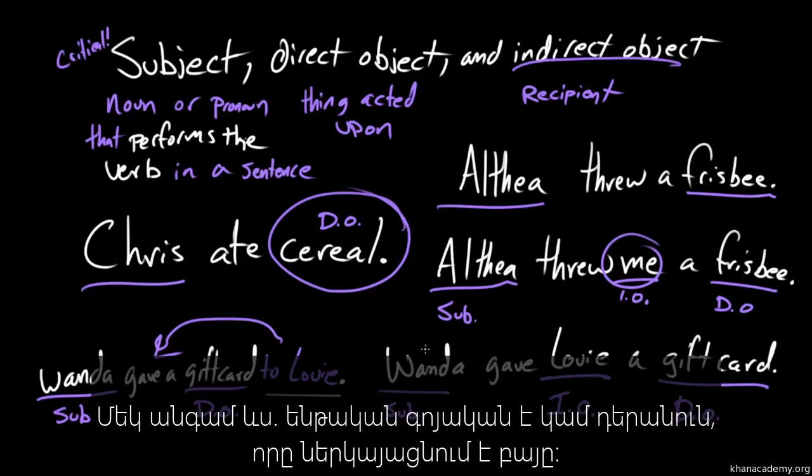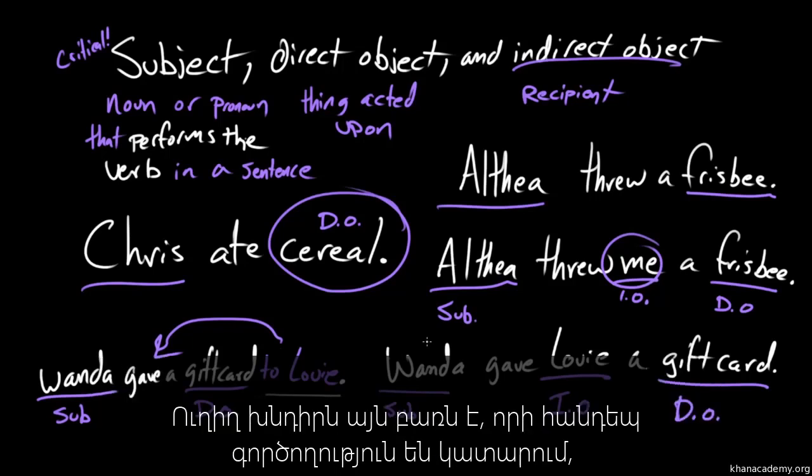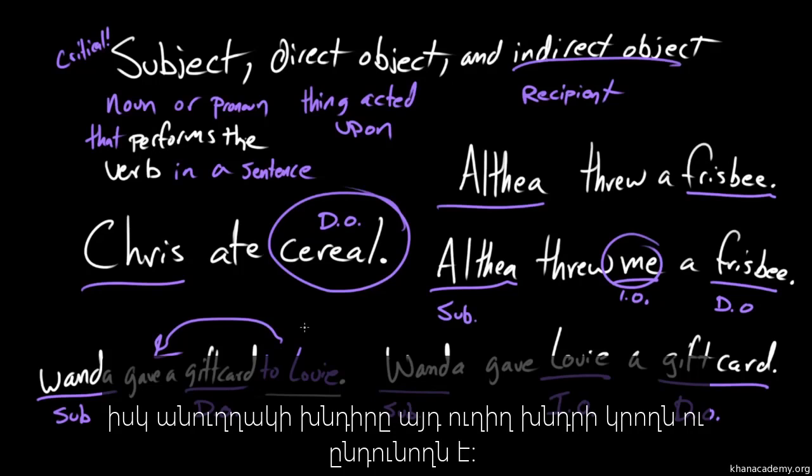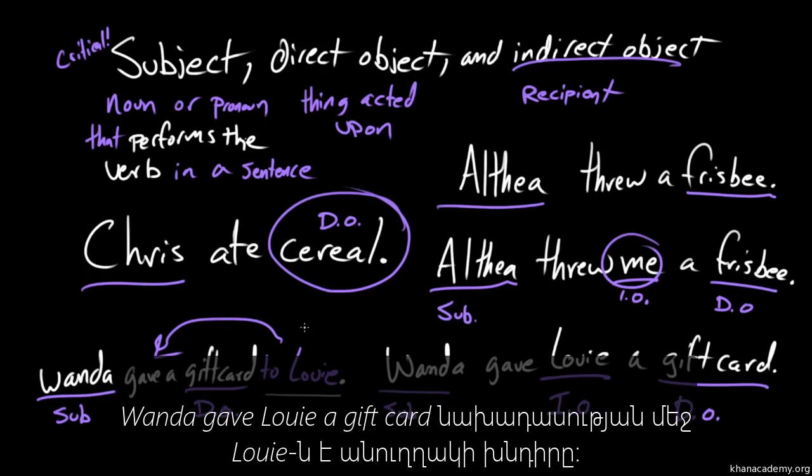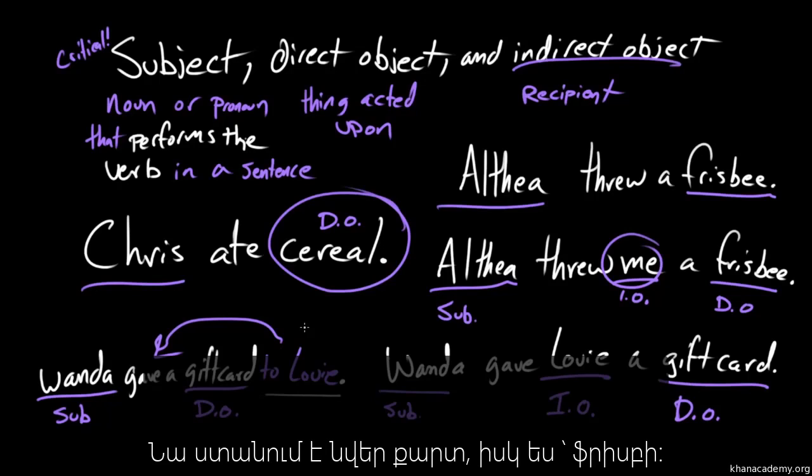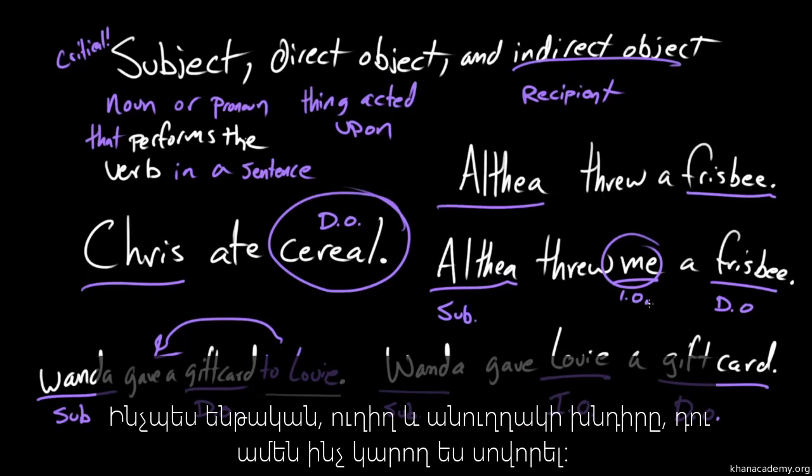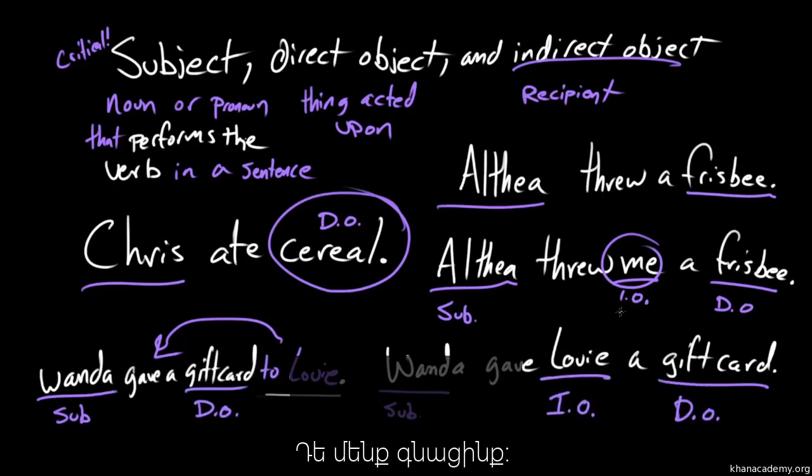So, to review, the subject is the noun or pronoun that performs a verb in a sentence. The direct object is the thing that's acted upon. And the indirect object is the recipient of that direct object. It's the thing that gets the direct object. In the case of Althea threw me a frisbee, the pronoun me is the indirect object. In the case of Wanda gave Louis a gift card, Louis is the indirect object. He gets the gift card, I get the frisbee. Right. That is subjects, direct object, and indirect objects. You can learn anything. David out. Rosie out.